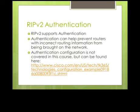RIPv2 does support authentication. Authentication can help prevent routers with incorrect routing information from being brought onto the network. Essentially, all the routers have to have the same password. If a router were to be brought onto the network without the correct password, we would not accept updates from it. This can help prevent attacks on our network or incorrect routers being brought on accidentally.